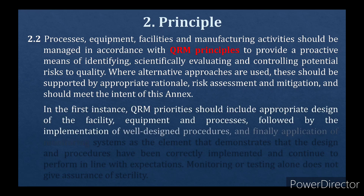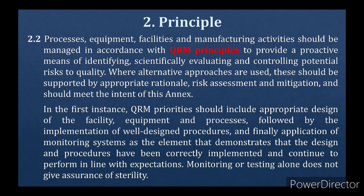In the first instance, QRM priorities should include appropriate design of the facility, equipment and processes, followed by the implementation of well-designed procedures, and finally application of monitoring systems as the element that demonstrates that the design and procedures have been correctly implemented and continue to perform in line with expectations. Monitoring or testing alone doesn't give assurance of sterility.